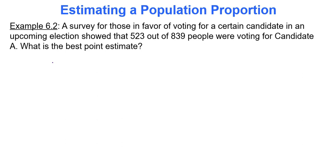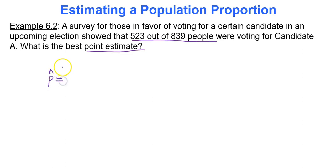What about a survey for those in favor of voting for a certain candidate in the upcoming election? It showed that 523 out of 839 people were voting for candidate A. What is the best point estimate? We're finding our sample proportion — the proportion in favor of voting for candidate A. They don't outright give you the percentage, so you calculate it: 523 out of 839. That's our sample proportion, about 0.62. That's our point estimate.